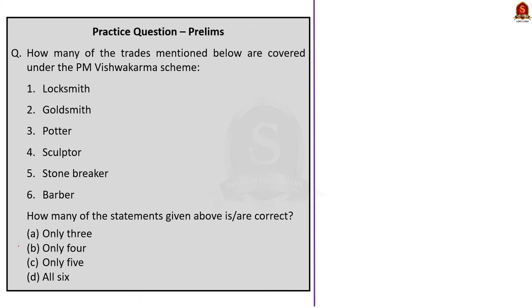Question 3: How many of the trades mentioned below are covered under PM Vishwakarma scheme? Locksmith, goldsmith, potter, sculpture, stone breaker, and barber. All six trades listed fall under the PM Vishwakarma scheme, so the correct option is option D.